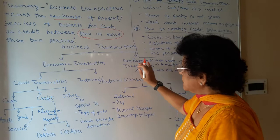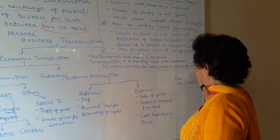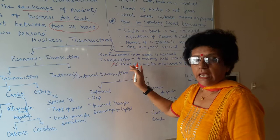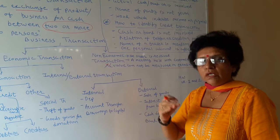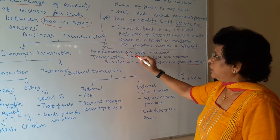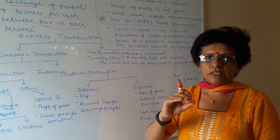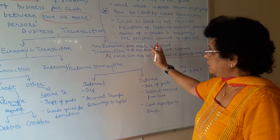Let us concentrate first on non-economic. Non-economic transactions are actually not valued in terms of money, and that is why we are not recording them in books of account. Any non-economic transaction is not valued in terms of money and it is not financially important — it doesn't change any financial value in our books of account. An example: an order is received. Just the receipt of an order is not an economic transaction.